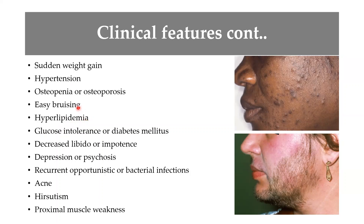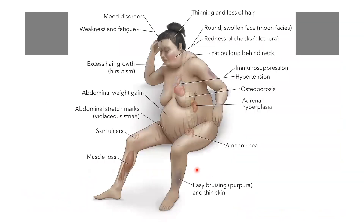Additional signs and symptoms include hyperlipidemia due to lipolysis releasing fat into the blood, osteopenia from effects on bone, easy bruising due to skin changes, diabetes mellitus or glucose intolerance because cortisol counteracts insulin, decreased libido, depression, psychosis, acne, hirsutism, proximal muscle weakness, and recurrent opportunistic bacterial infections due to immune suppression.